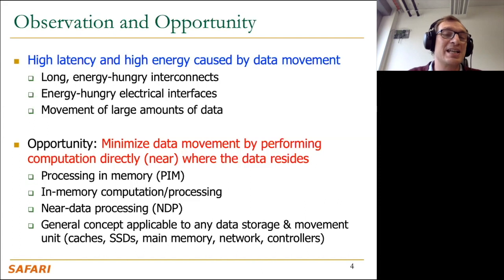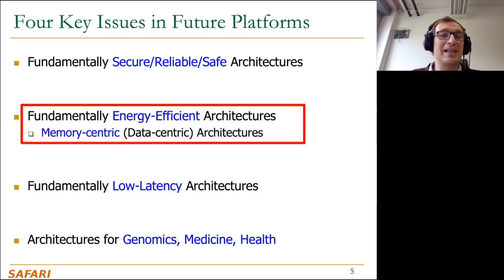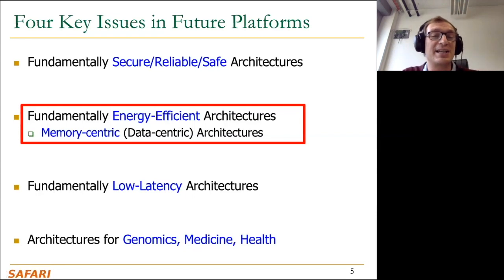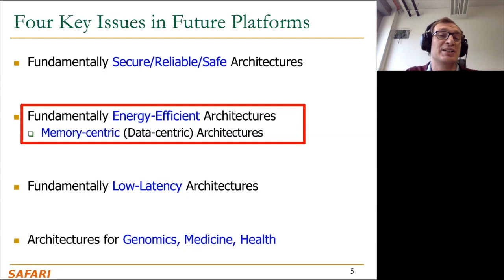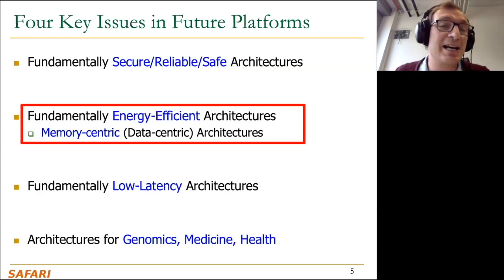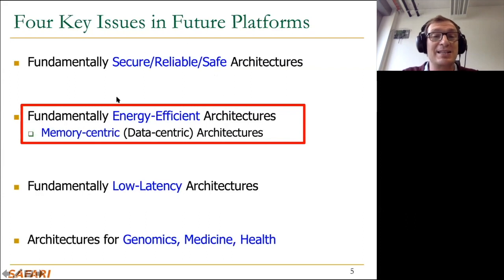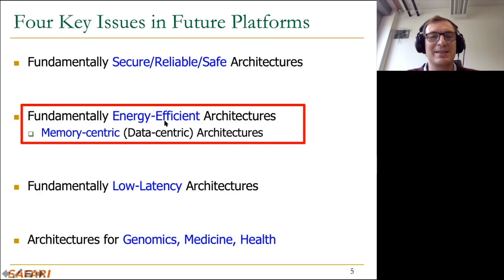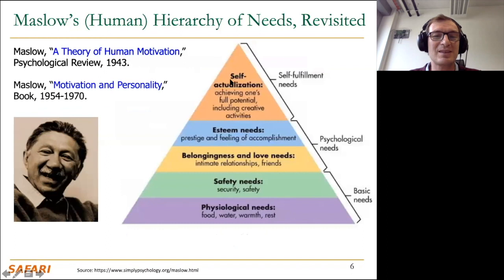Processing in memory will actually handle many future platform issues. It's good for energy efficiency, low latency, and specialized architectures. It's also beneficial for security, reliability, and safety — if you're doing processing inside memory where the data is, you're not moving data as much, so you're not leaking much information. A lot of attacks today are caused by data movements; if you're not moving data, you can protect it much better. I'm going to motivate it primarily from an energy perspective, since that's one of the most critical concerns.